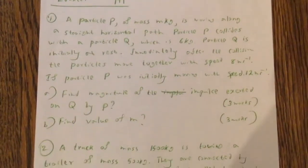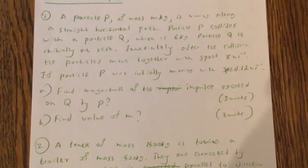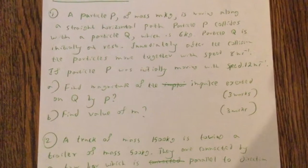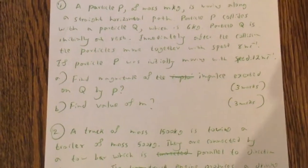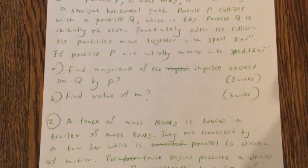If particle P was initially moving with speed 12 m per second, find magnitude of the impulse exerted on Q by P. Find value of m.